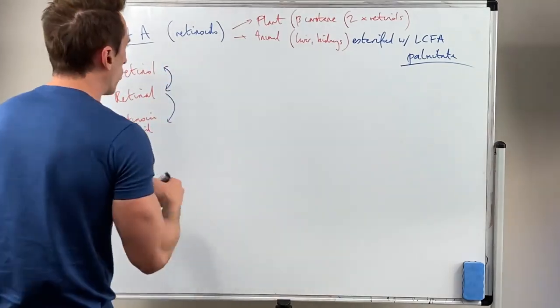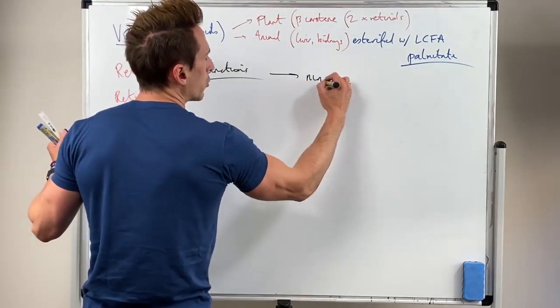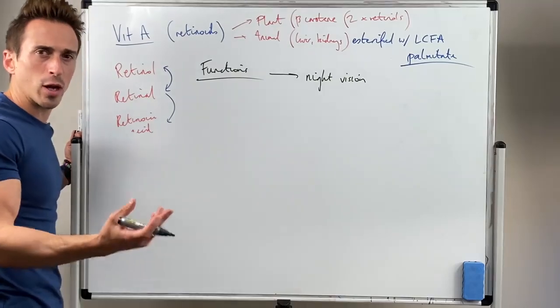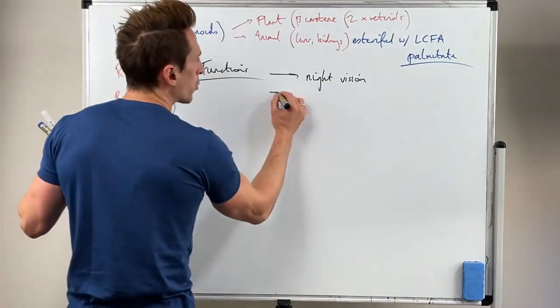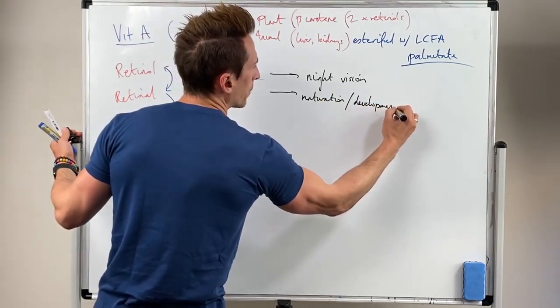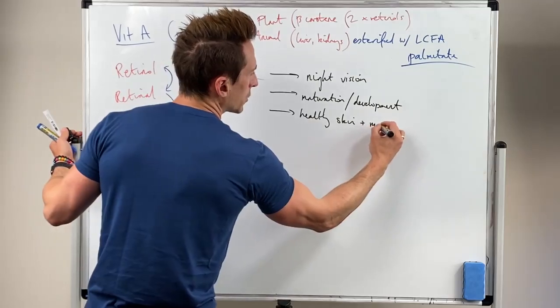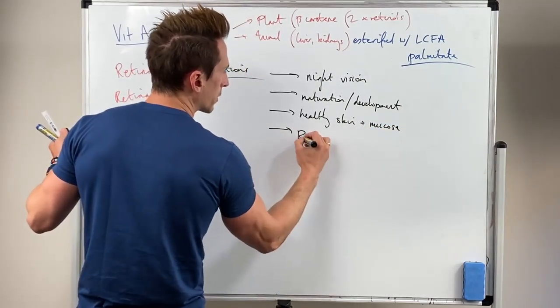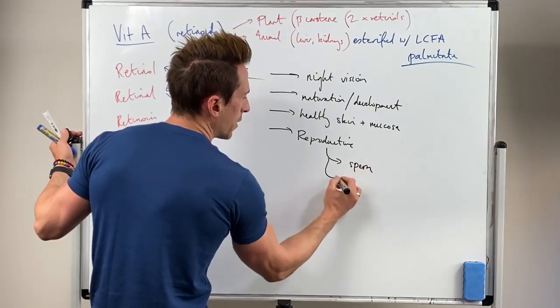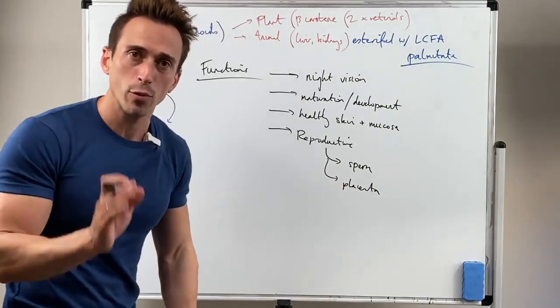Okay, what does retinol do in the body? So you've probably heard of retinol being really important when we look at the functions, really important for night vision. That's true. Specifically what we're referring to is low or dim light, its ability to respond to low or dim light and allow for you to be able to see something. It's also really important for maturation and development, so early on. It's important for maintaining healthy skin and mucosa, so mucous lining. And it's important for reproductive health. So for example, for males it's important for sperm production, and for females maintaining a healthy placenta. So that means it's important throughout one's pregnancy.